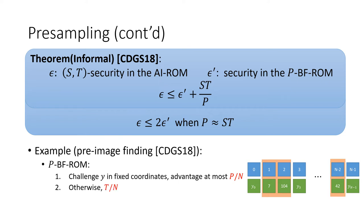And otherwise, these p fixed coordinates do not help invert pre-image y. And by making at most t queries, the advantage will be at most t over n. And therefore, the security in the p-bit-fixing realm is at most p plus t over n.